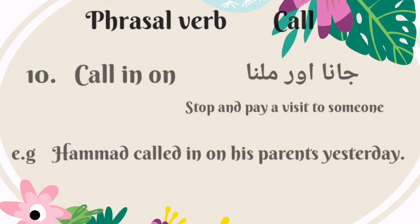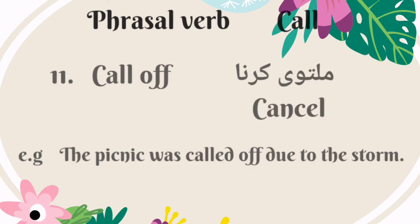The tenth phrasal verb is 'call in on.' It means stop and pay a visit to someone — Urdu mein is ka matlab hai jana aur milna. For example: Hamaad called in on his parents yesterday. The eleventh phrasal verb is 'call off.' It means to cancel — Urdu mein is ka matlab hai multavi karna. For example: the picnic was called off due to the storm.